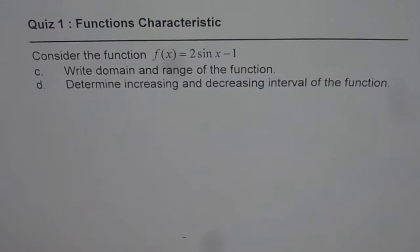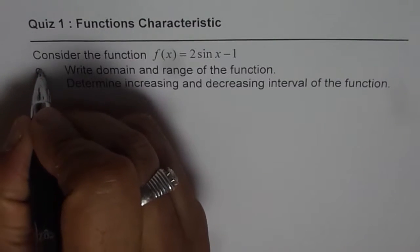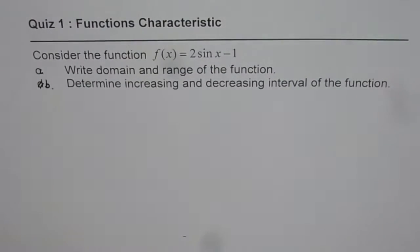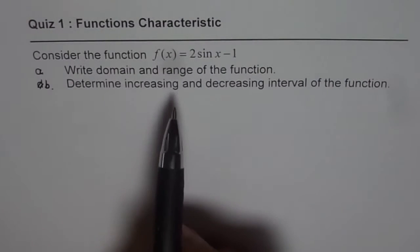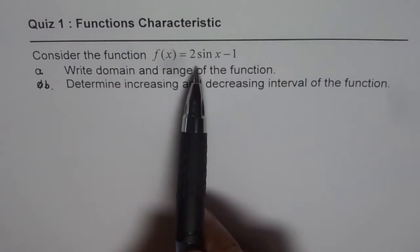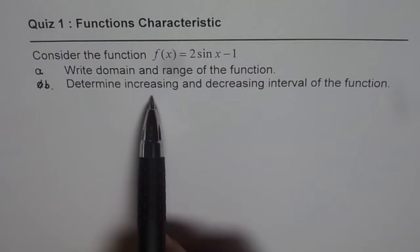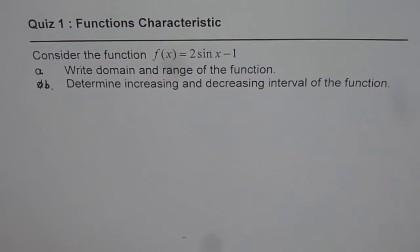Quiz 1 on Functions Characteristics. Consider the function f(x) = 2sin(x) − 1. We need to write the domain and range of the function, and determine the increasing and decreasing intervals. I have removed some other parts from this question, so we will only concentrate on these two points for the given function.